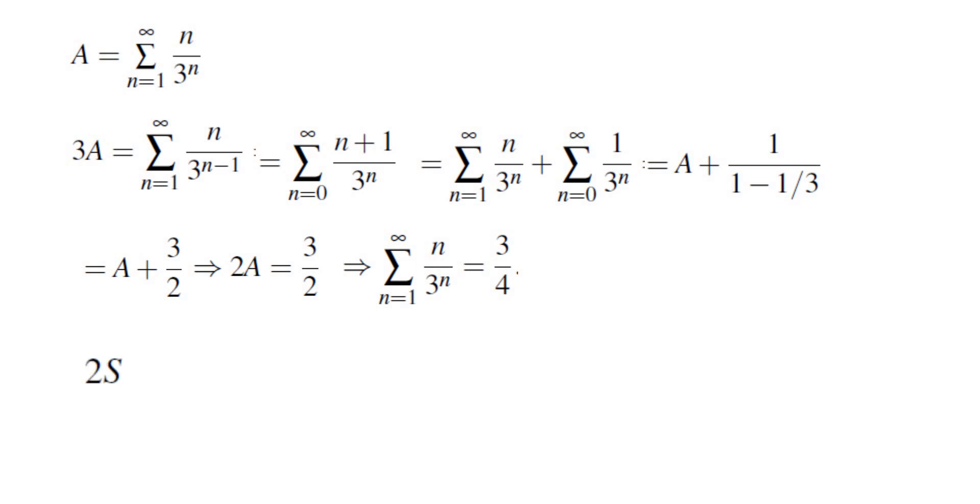So now back to the original problem, we got 2S is equal to the square of this quantity, but this quantity is 9 over 16 because it's the square of 3 fourths. So that gives us the answer is 9 over 32.